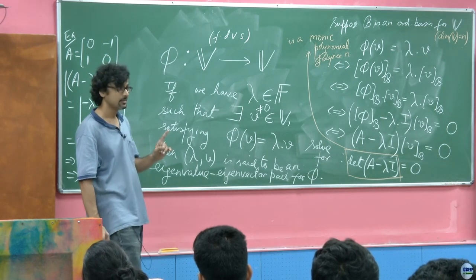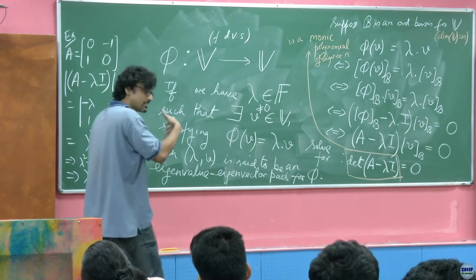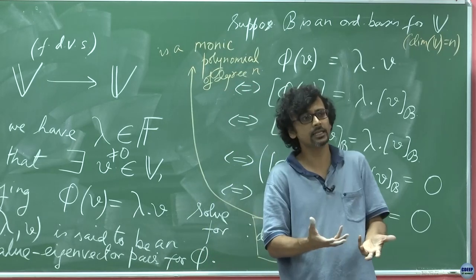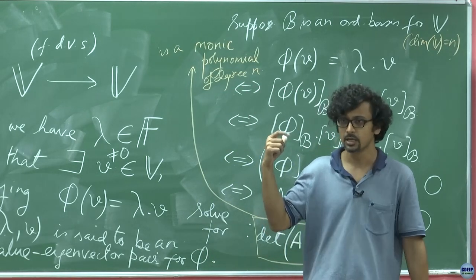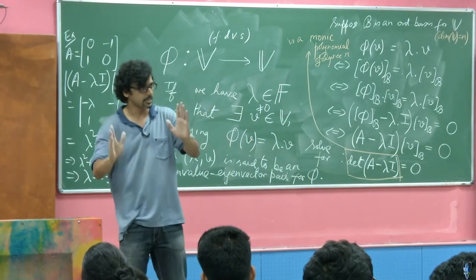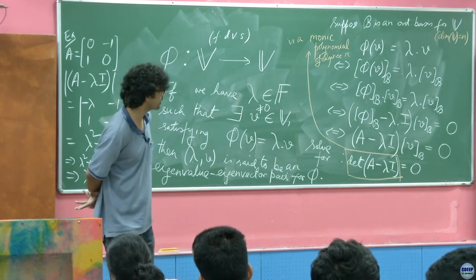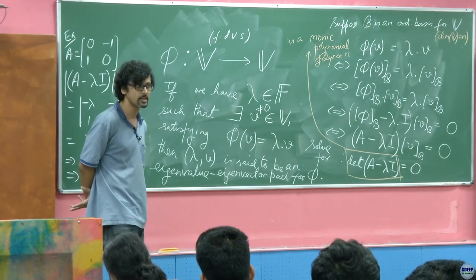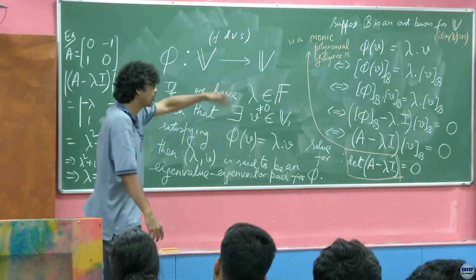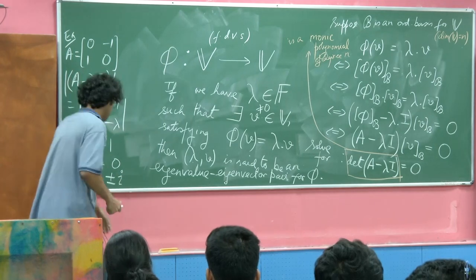But existence of eigenvalues is not enough. What we did earlier was more: we diagonalized the matrix through a transformation, and that diagonalization was made possible not just by the eigenvalues but also by the eigenvectors — stacking eigenvectors side by side gave us the transformation matrix. So we need special properties of the eigenvectors as well.